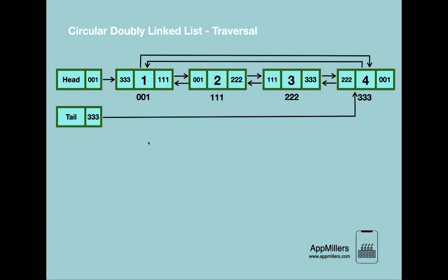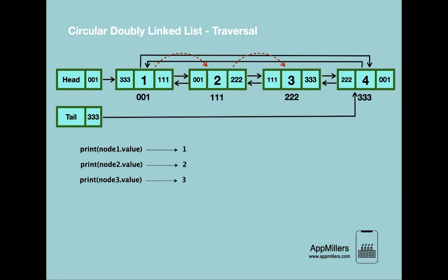Starting from the first node, we visit each node and print its value. The first node is node 1, so we print its value, which is 1. While visiting each node, we check if the current node equals the tail. If so, we terminate the loop because we have reached the last node. Otherwise, we continue to the next node, printing its value each time.